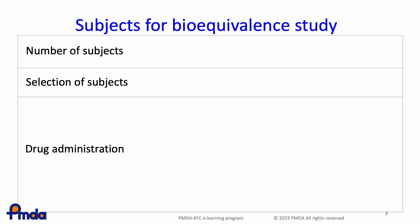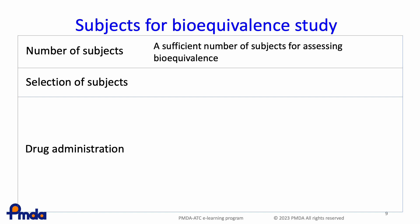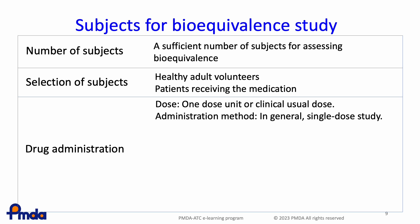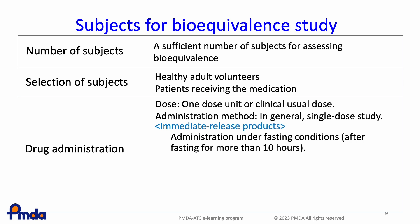A sufficient number of subjects for assessing bioequivalence should be included. Regarding the selection of subjects, healthy adult volunteers should be enrolled in principle, but when it is unfavorable to use healthy subjects due to potent pharmacological action or adverse effects, patients receiving the medication should be enrolled. Generally, one dose unit or clinical usual dose is administered to the subjects. Bioequivalence studies should typically be performed as single dose studies. Multiple dose studies may be employed for drugs which are repeatedly administered to patients.